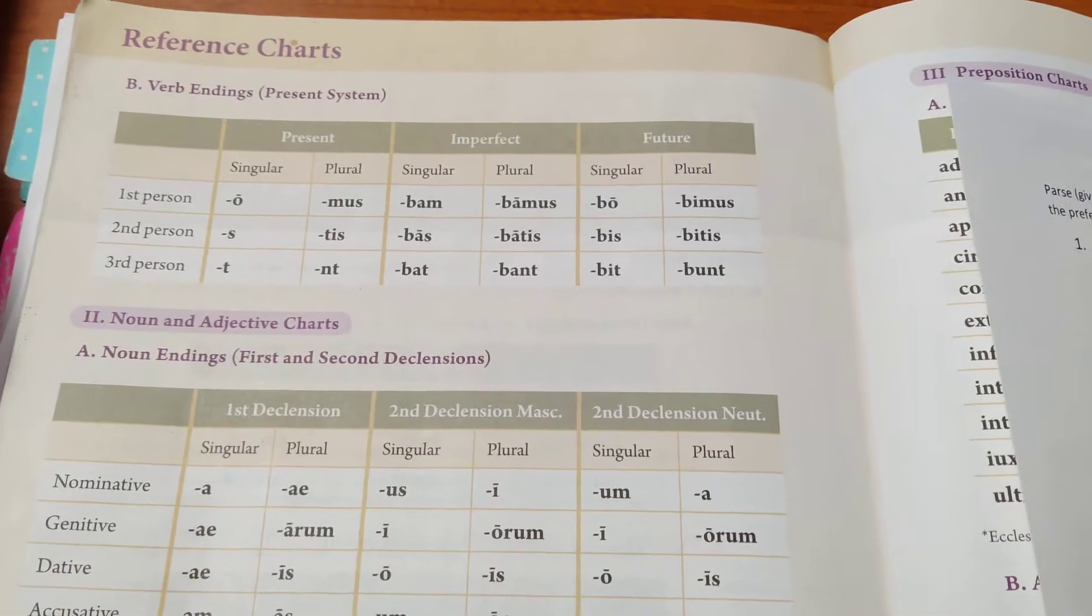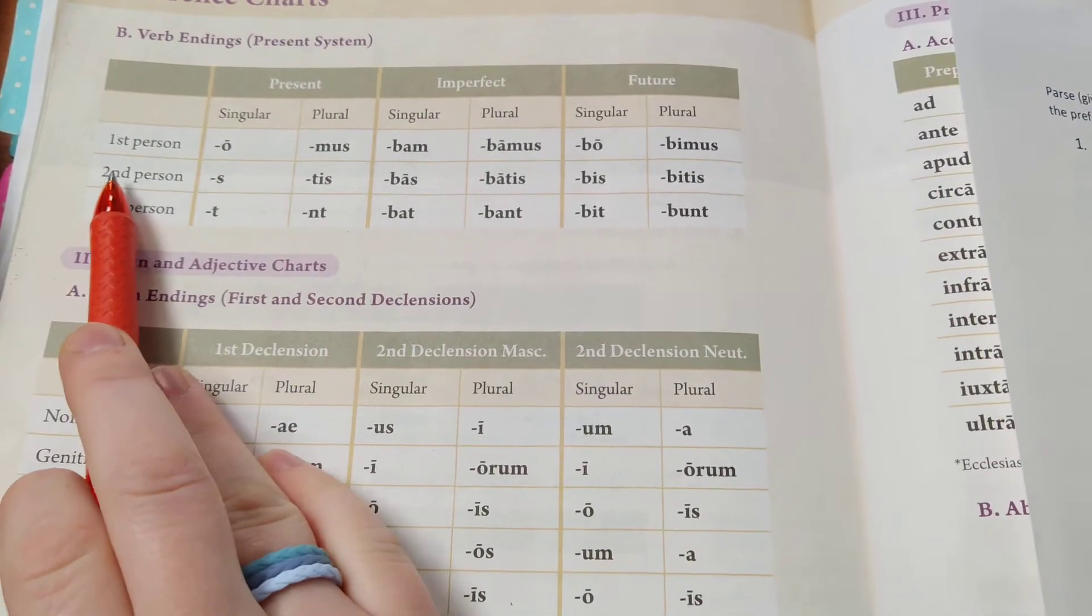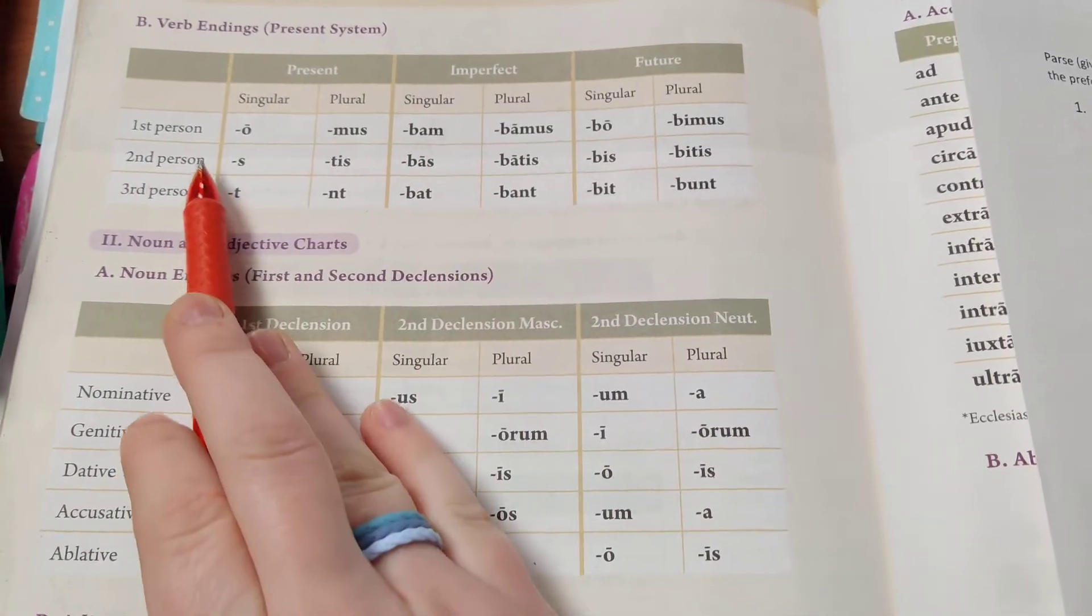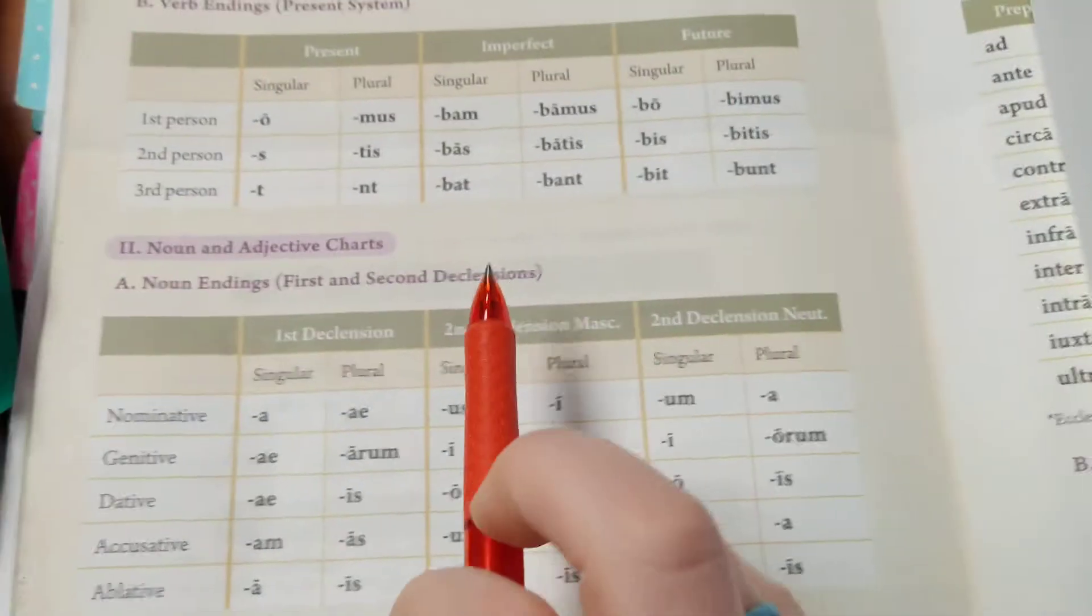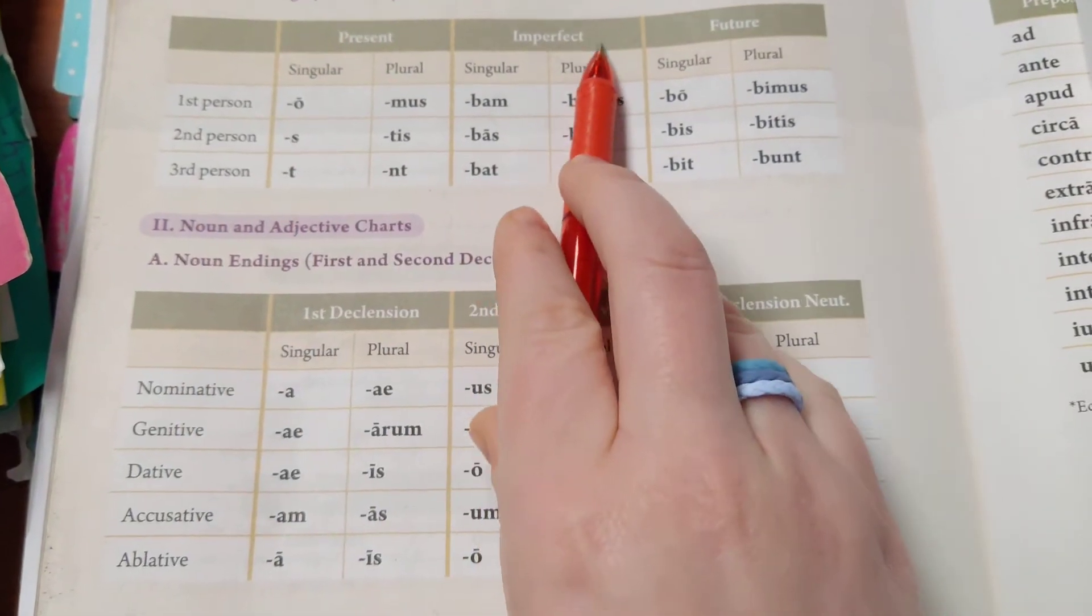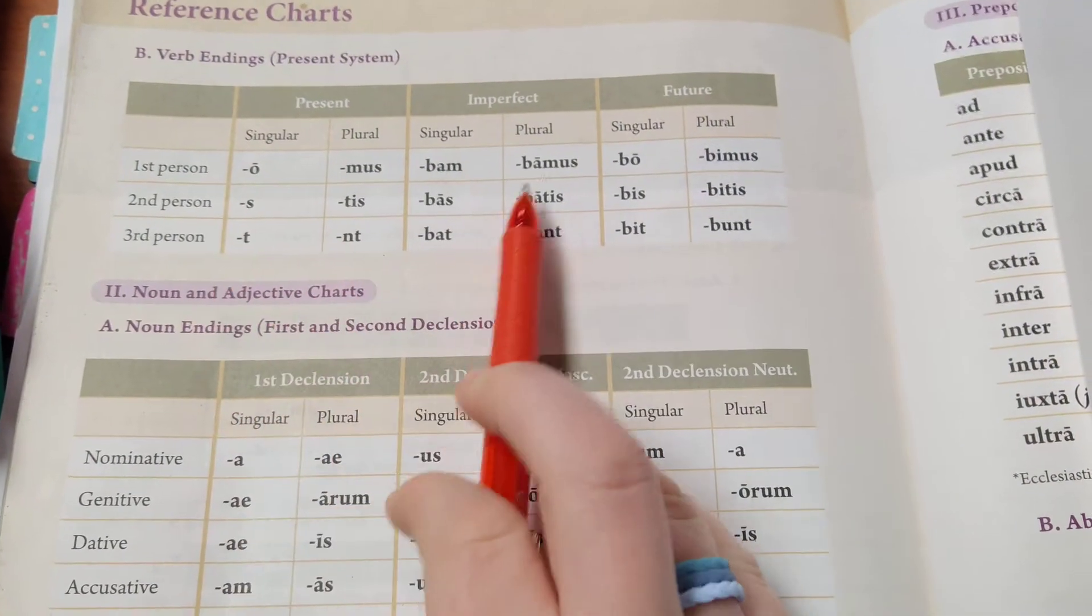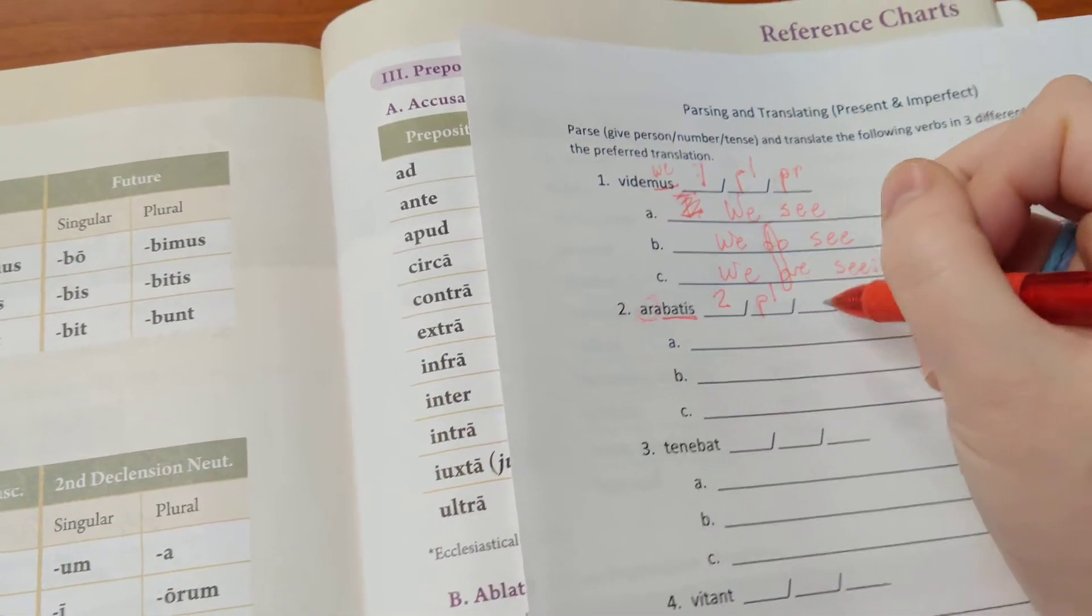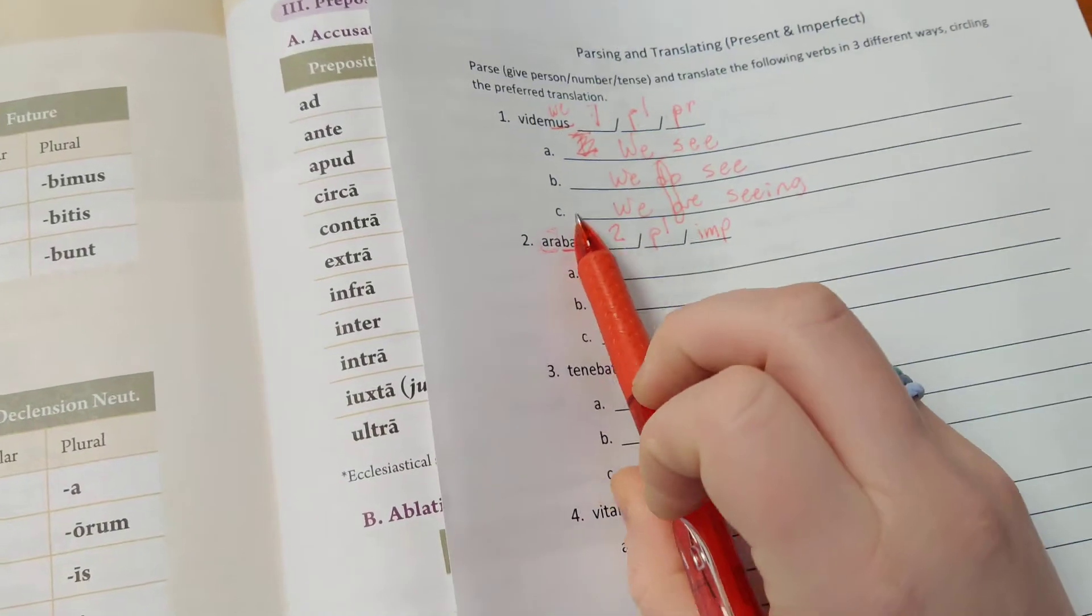We go over here. We need what person is it? What number is it? What tense is it? Person is your row. So we're finding -batis. It's in the second person row, so we write 2 for second person. It is in the plural column for number, and then it is in the imperfect tense chart - bam, bas, bat, bamus, batis, bant. That one.